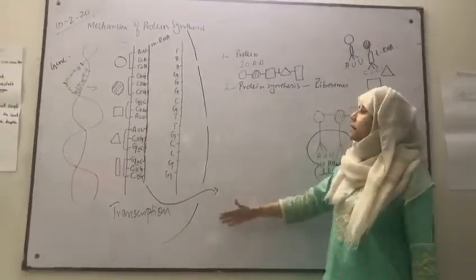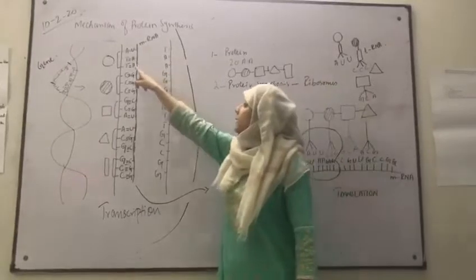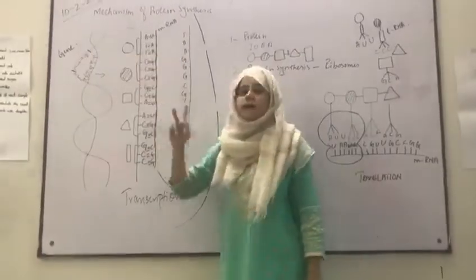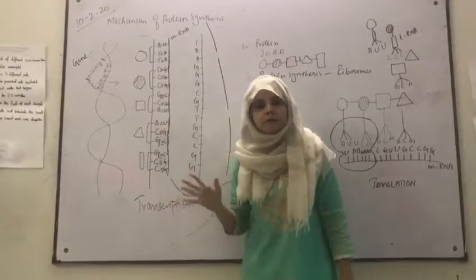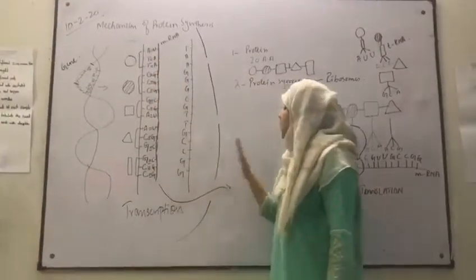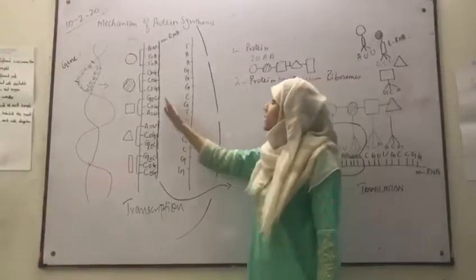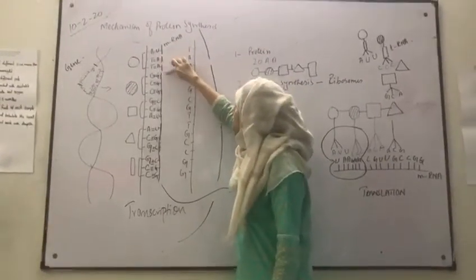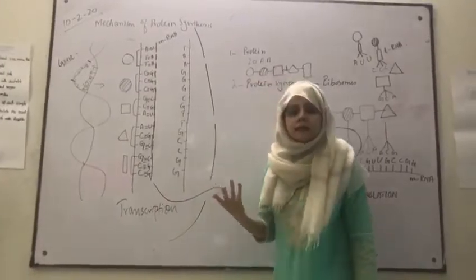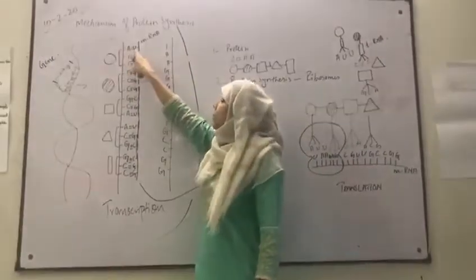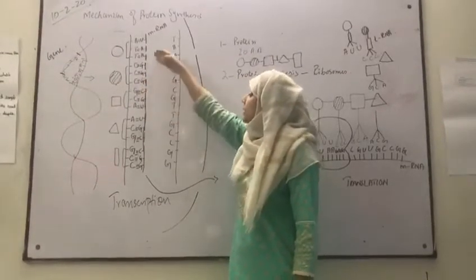At first, the DNA will get unwind and unzip, exposing its base sequence. Each triplet code will code for one specific amino acid — triplet code means three consecutive nitrogen bases will code for one specific amino acid. When they expose their base sequence, the nucleotides of messenger RNA present in the cytoplasm will come one by one and start copying this information. Adenine will get copied by uracil, because RNA does not contain thymine — it contains uracil. Thymine will bond up with adenine and cytosine will bond up with guanine.